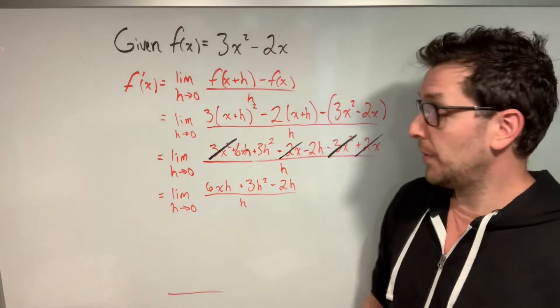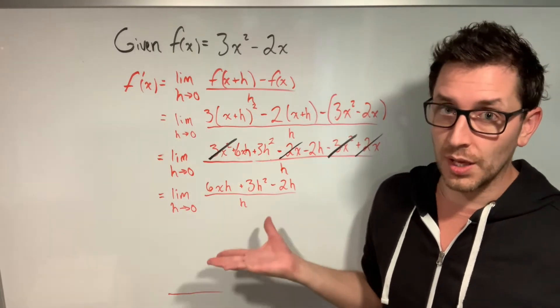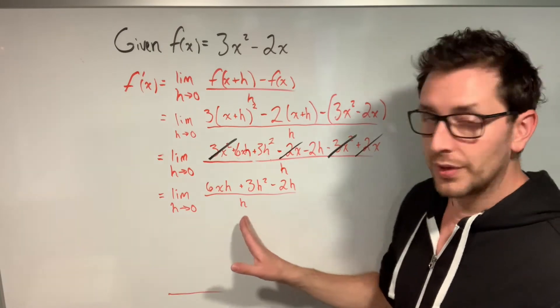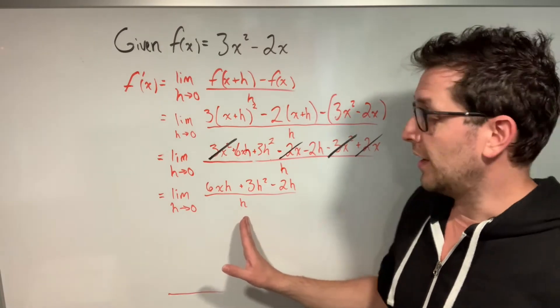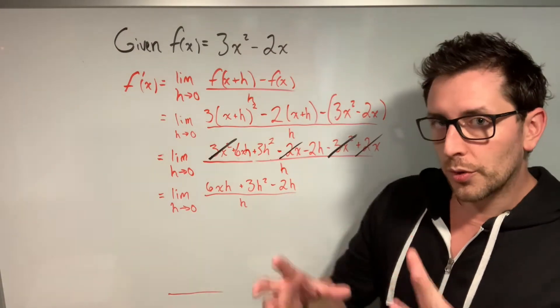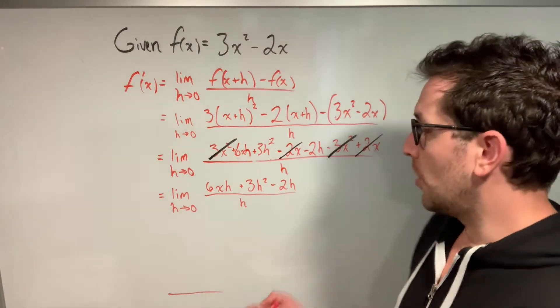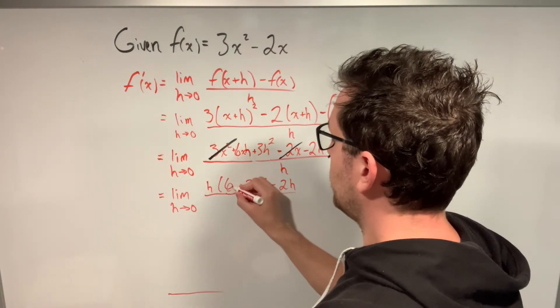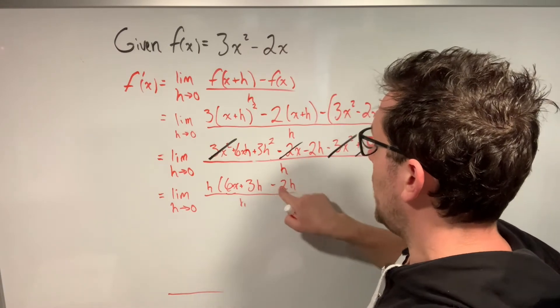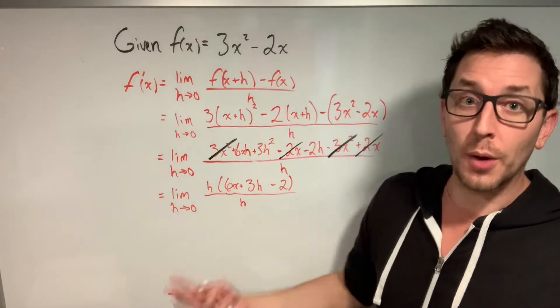Now normally, when we evaluate limits, we can take this value right here, substitute it into our expression to find our limit. But in this case, when we do that, we would get zero in the denominator, which is not helpful to anybody. So the way we get around that is we look at the numerator, and we're going to remove a common factor of h from each term. If we take h out of each term, we're going to be left with h times (6x + 3h - 2). You can see I've common factored out an h. So why did we common factor out that h?